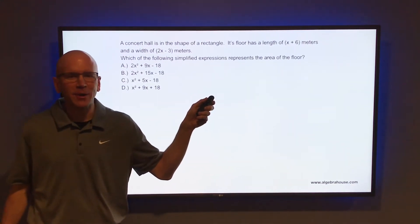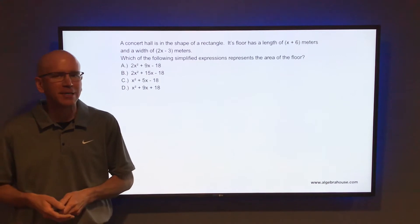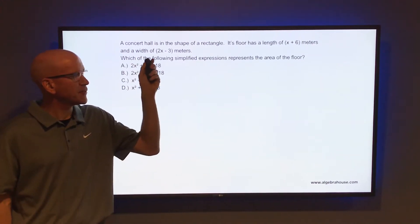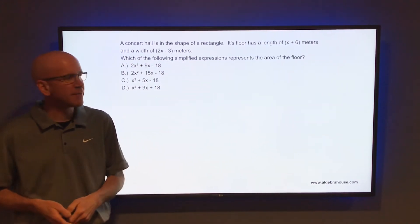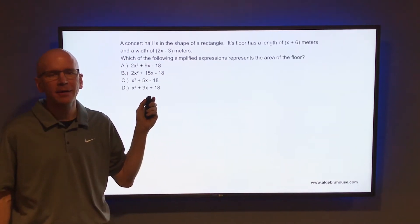A concert hall is in the shape of a rectangle. Its floor has a length of x plus 6 meters and a width of 2x minus 3 meters. Which of the following simplified expressions represents the area of the floor?